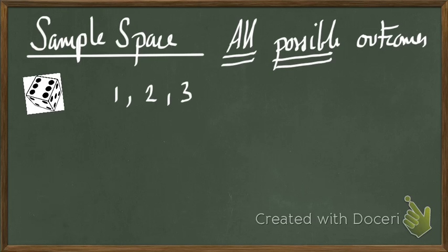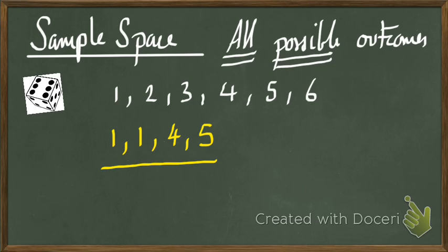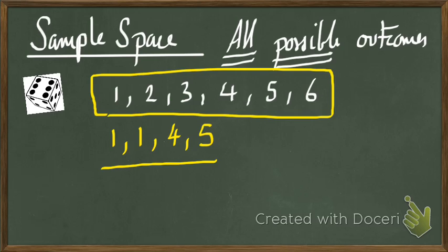Well, if it was a dice, what are the possible outcomes? I could get one, two, three, four, five, and six. Now if I just happen to throw the dice three times and I got a one, got another one, got a four, and got a five, those are my outcomes.